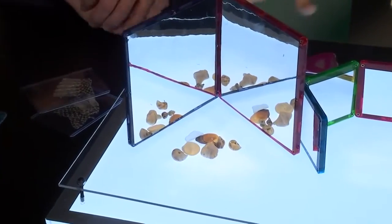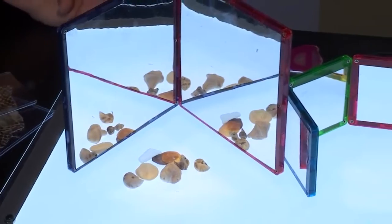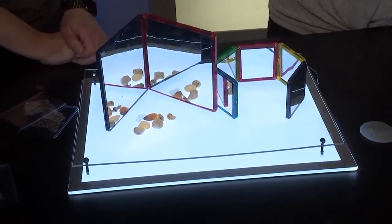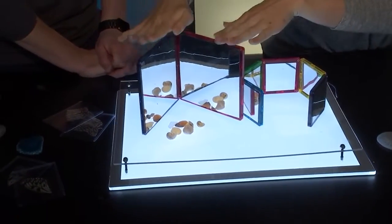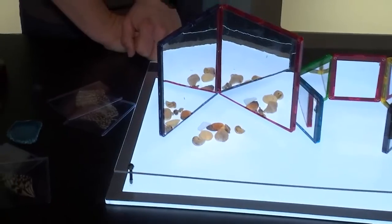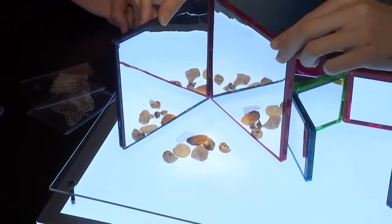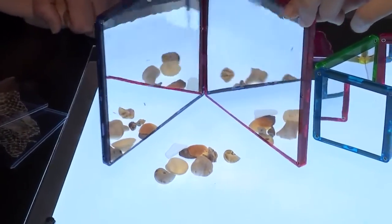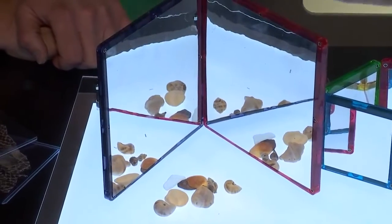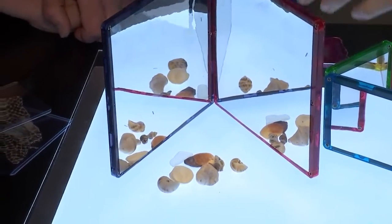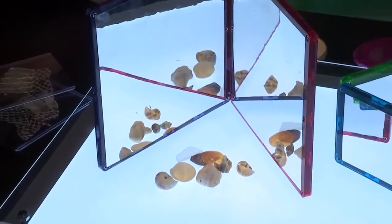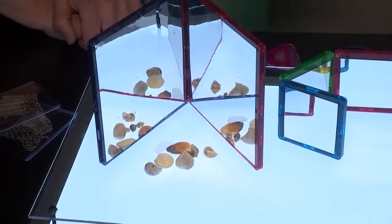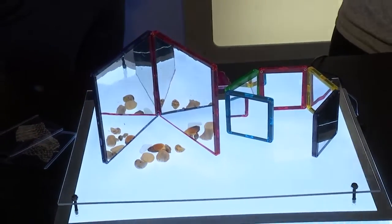So we have a light table here, and one of the misconceptions about kaleidoscopes is that the tube plays a part, when it's really actually about the mirrors inside of that tube. So I have these two mirrors here and we have some shells underneath there. If we move these mirrors in and out, you'll notice those reflections—the number of reflections is changing based on that angle, and so the number of shells we're seeing in those reflections is changing. So depending on the number and the angle of the mirrors that we have inside of our kaleidoscope tube, we'll see a different pattern or a different number of reflections.